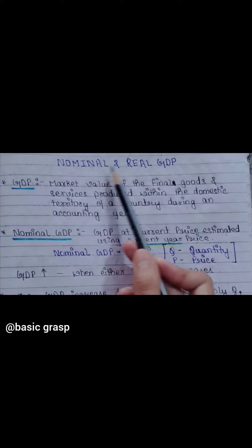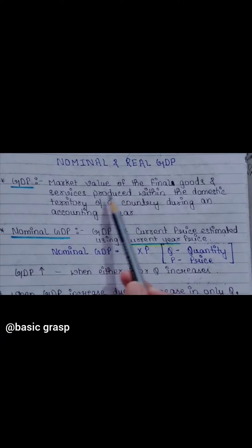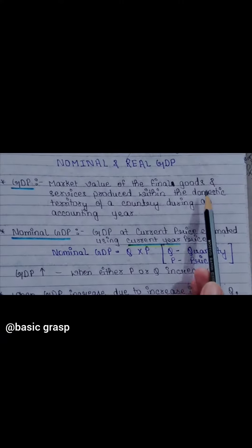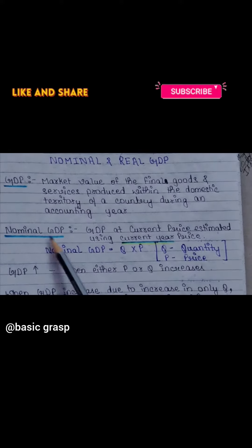In today's video, we will talk about nominal and real GDP, which is the market value of final goods and services produced during an accounting period.